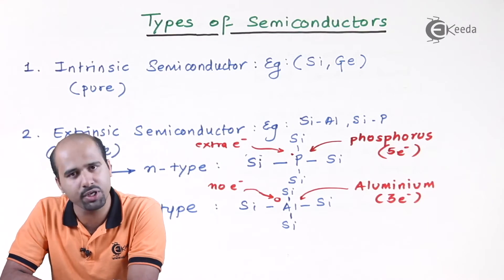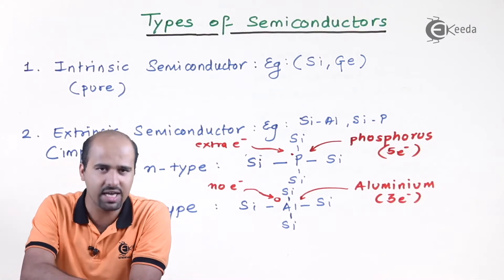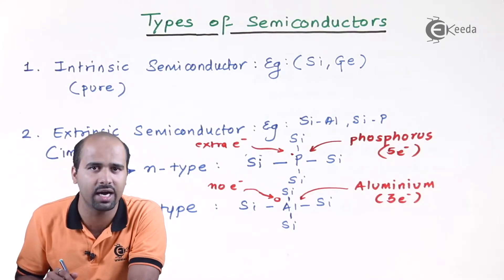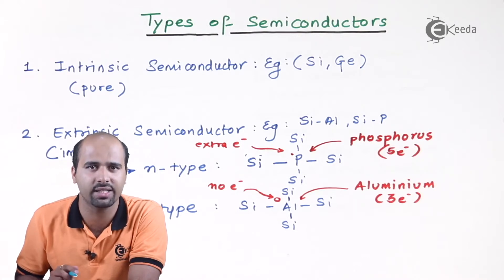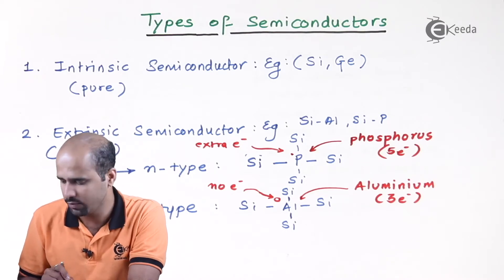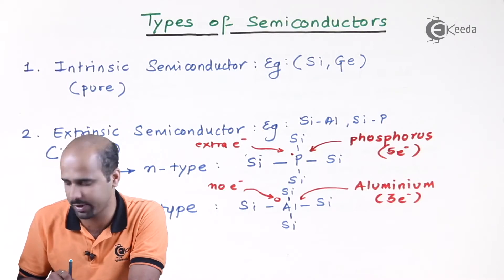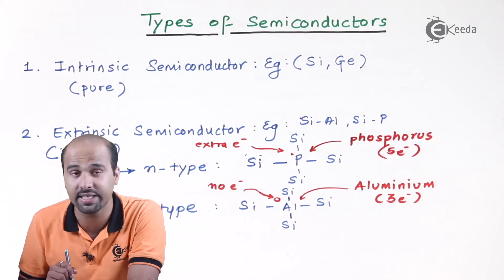Intrinsic semiconductors are called pure semiconductors and extrinsic semiconductors are called impure semiconductors. Intrinsic semiconductors are of two types: one is SiGe, called single crystal semiconductor, and we have compound semiconductor GaAs, that is gallium arsenide — the material found in LEDs. Extrinsic semiconductors are bifurcated into two types: N-type and P-type.